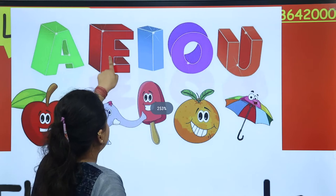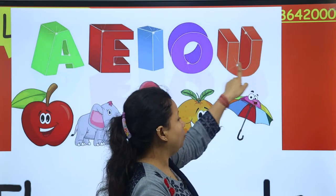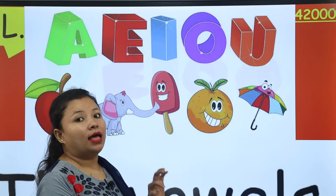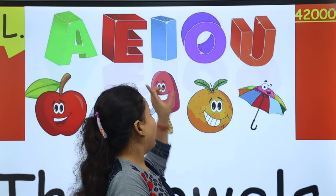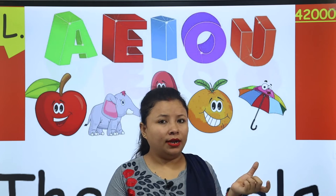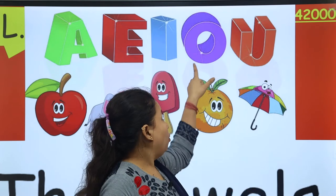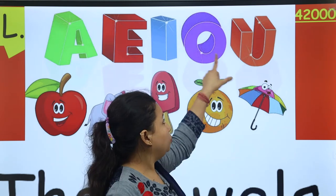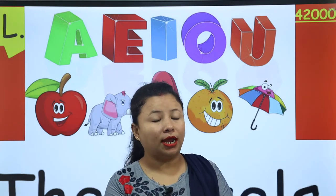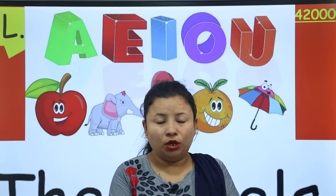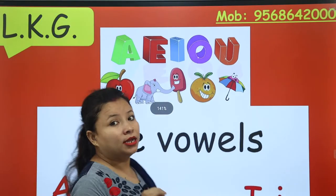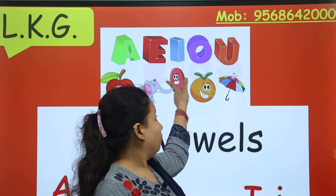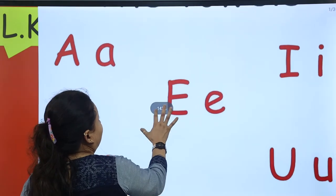That is A, E, I, O, U. A sounds like 'A', E sounds like 'E', I sounds like sometimes 'I' and sometimes 'E', O sounds like 'O', and U sounds like 'A' and sometimes like 'U', like in 'uniform'. So there are 26 alphabets in our English language — 5 are vowels and 21 are consonants.